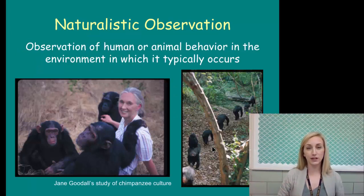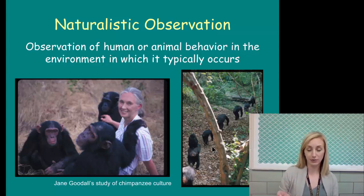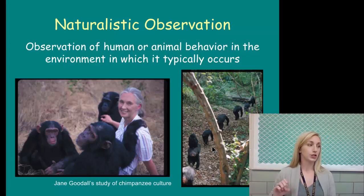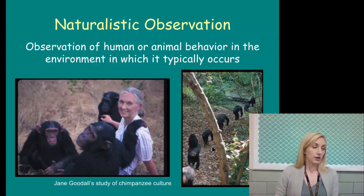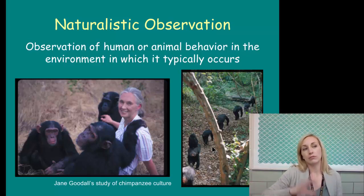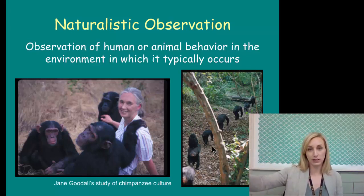Naturalistic observation is the observation of human or animal behavior in the environment in which it typically occurs. Jane Goodall is an example with chimpanzee culture. For instance, to see which day of the week students are most rowdy in the commons, you would go down every fourth and fifth bell and simply sit and observe and write what you see.